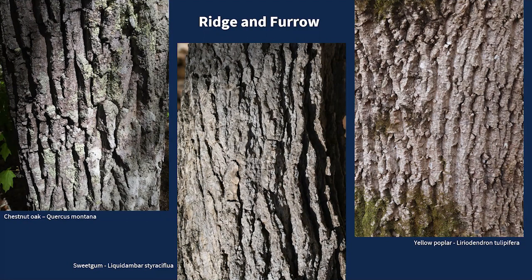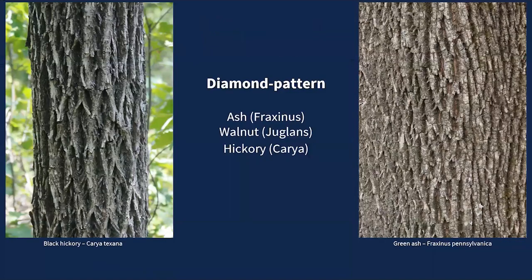Some ridge and furrow bark has ridges that interlace among themselves to create a noticeable diamond pattern — rather than just a longitudinal ridge with a clear furrow beside it, they kind of intersect to form diamonds. This is really common in our ash trees, walnuts, and hickory trees. Other species have it too, but keep in mind this is a subset of ridge and furrow.